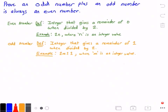An even number is an integer that gives a remainder of 0 when divided by 2. An example of this would be 2 times n, where n is some arbitrary integer value.